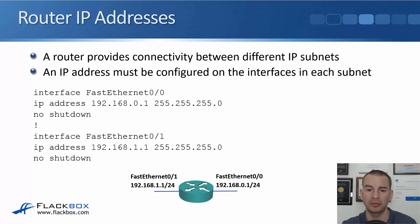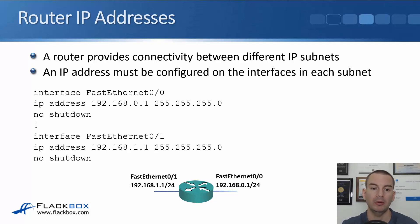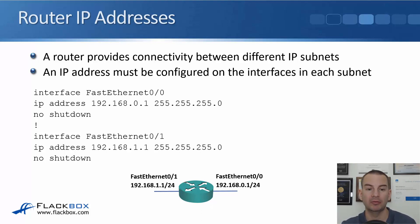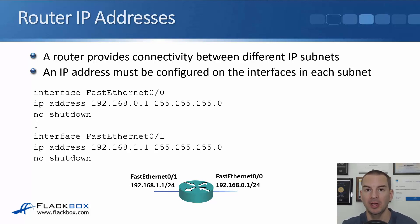After we've configured this, the router is going to be able to route traffic between those two networks. As well as routing traffic, it also gives IP connectivity to the router itself. So after we've done this, we would be able to open up a Telnet or SSH client like PuTTY and connect to the router to manage it.